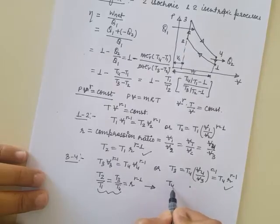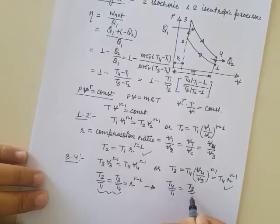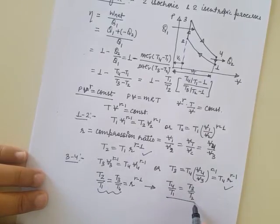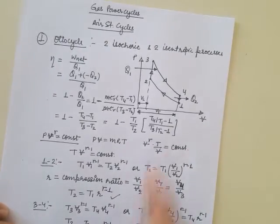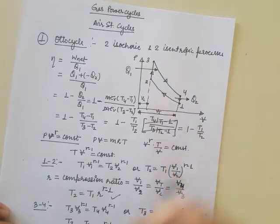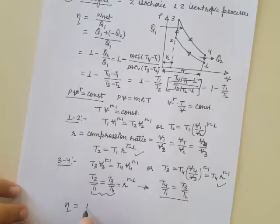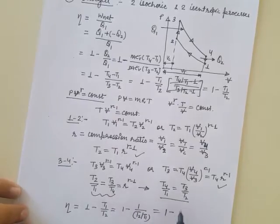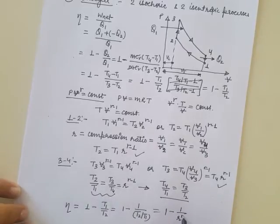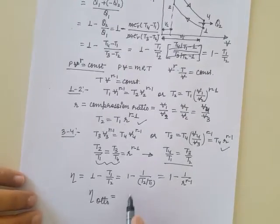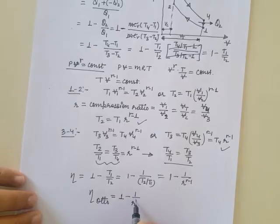On rearranging, we can write T4/T1 = T3/T2. Looking back at our efficiency expression, these ratios cancel out, and the efficiency simplifies to 1 - T1/T2. Replacing T1/T2 = 1/r^(γ-1), we get that the Otto cycle efficiency is η = 1 - 1/r^(γ-1).